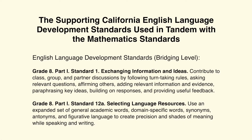The supporting California English Language Development Standards used in tandem with the Mathematics Standards. The ELD Standards at the Bridging Level are Grade 8, Part 1, Standard 1, Exchanging Information and Ideas, where students contribute to class, group, and partner discussions by following turn-taking rules, asking relevant questions, affirming others, adding relevant information and evidence, paraphrasing key ideas, building on responses, and providing useful feedback. And Grade 8, Part 1, Standard 12A, Selecting Language Resources, where students use an expanded set of general academic words, domain-specific words, synonyms, antonyms, and figurative language to create precision and shades of meaning while speaking and writing. Watch how students move from early levels of proficiency toward the bridging levels of these ELD Standards throughout the lesson.